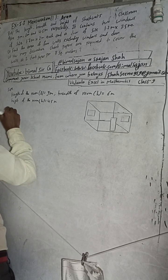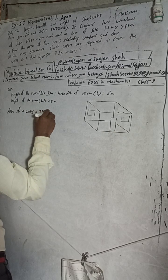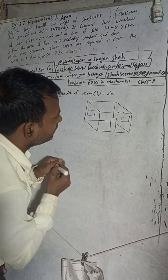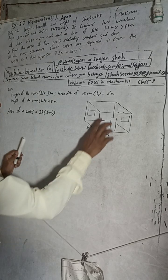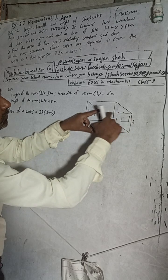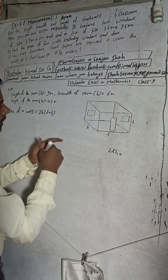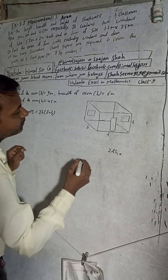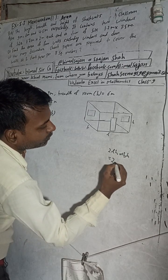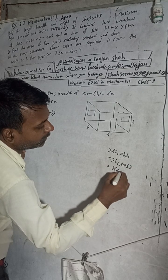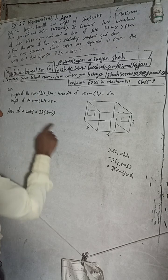Now, area of four walls. Area of four walls is equal to 2h(l + b). Suppose this is the room — length and breadth. This front wall will be l × h, and the back side is the same, so two times l × h. This side is b × h, and the opposite side is the same, so two times b × h. Taking h common: 2h(l + b). That means two times the perimeter of the floor into height. This is the formula.